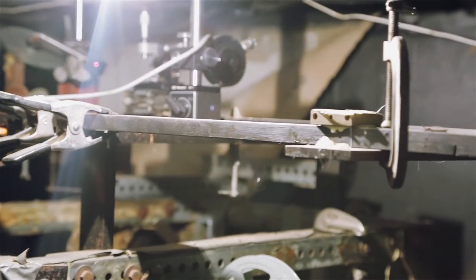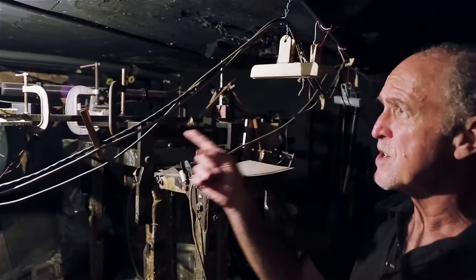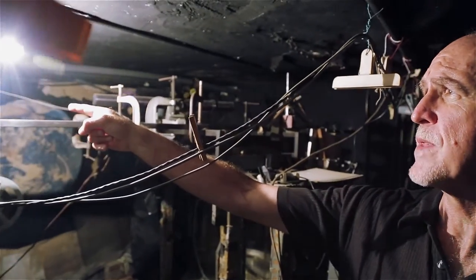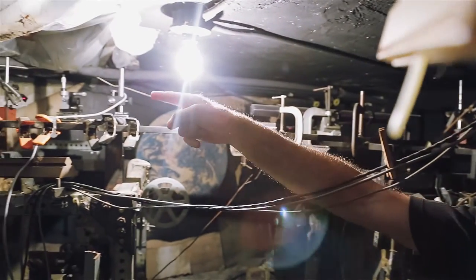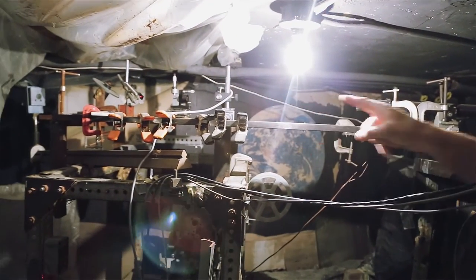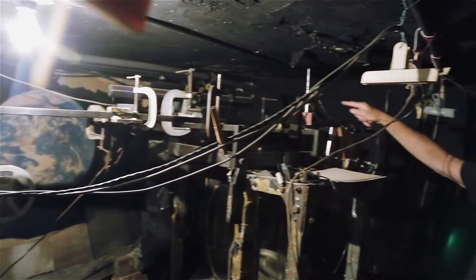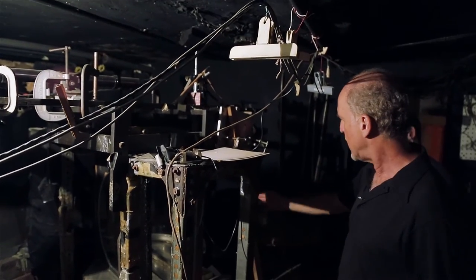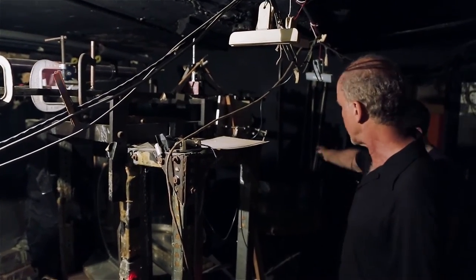See the laser overhead there? That laser goes through a shutter, an electronic shutter, hits a beam splitter. Half of it then bounces straight back to this mirror overhead and down here to where we wrap film around this cylinder.